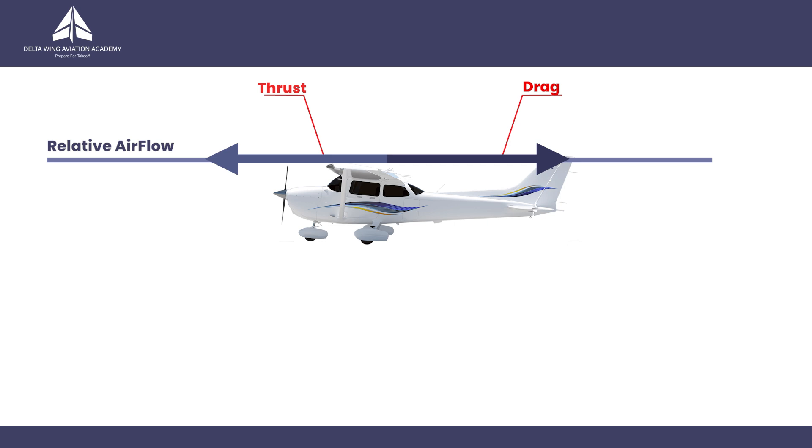Total drag consists of drag forces that are linked to lift production, known as induced drag, and those that are not linked to lift production, known as parasite drag.